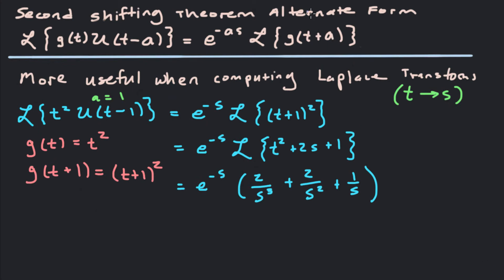The second shifting theorem alternate form says that the Laplace transform of g(t)·u(t-a) equals e^(-as) times the Laplace transform of g(t+a). This shifts your function and then you take the Laplace transform. If it's not written as t minus a already, you go to g(t+a), take the Laplace transform, and that gives the result. This form is more useful when computing the Laplace transform directly, going from t to s.